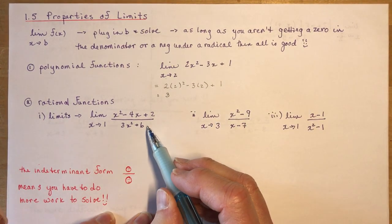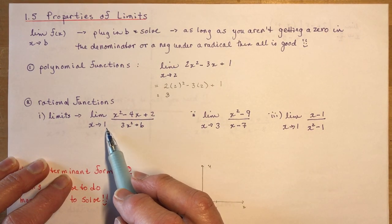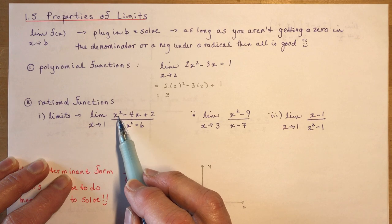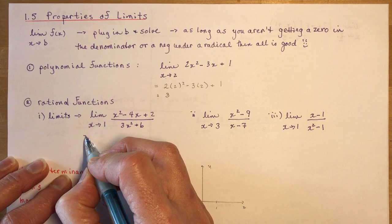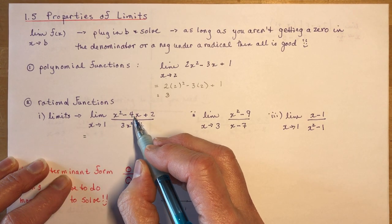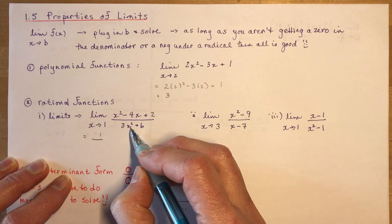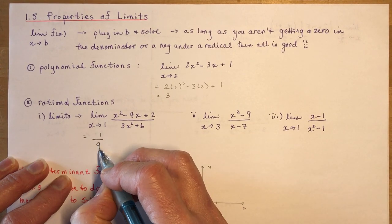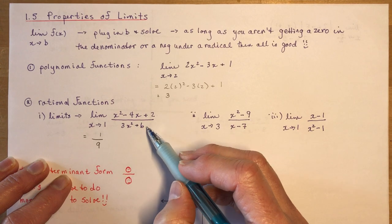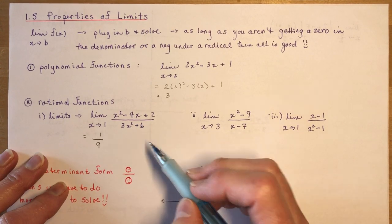For some rational functions, like this one as x approaches 1 — if I put in 1, I'd have 1 minus 4 is minus 3, plus 2 is 1 on the top, and putting in 1 on the bottom gives me 9 — so I get 1 over 9. You plug it in first to see if the limit exists, and if it does, you're done.